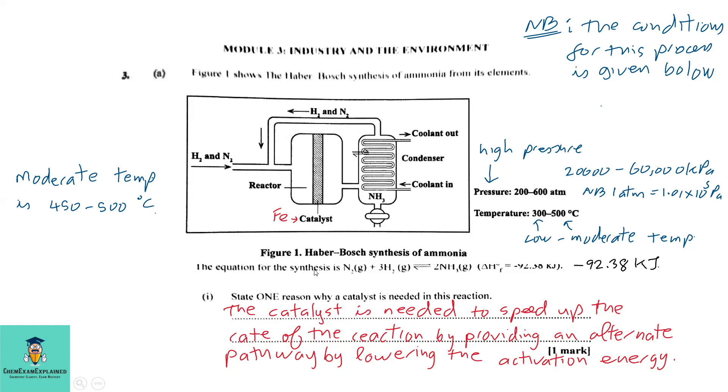The equation for the synthesis of N2 and H2 to produce ammonia gives us an enthalpy of formation value of negative 92.38 kilojoules. This, of course, is saying that our reaction is exothermic. This simply means that heat is a product. Part 1: State one reason why a catalyst is needed in this reaction. The catalyst is needed to speed up the rate of the reaction by providing an alternate pathway by lowering the activation energy.